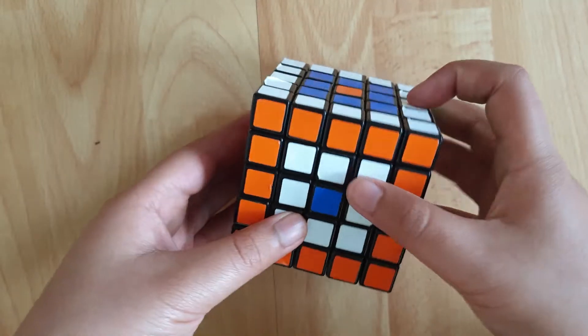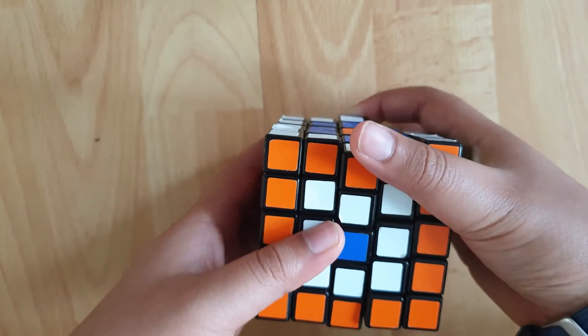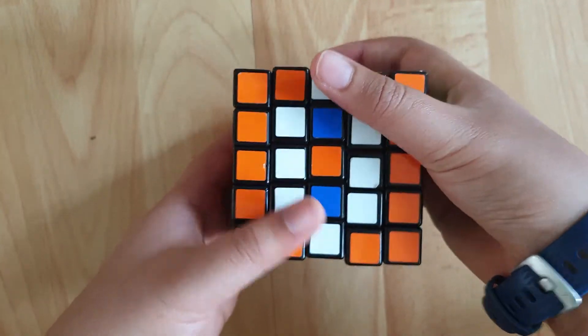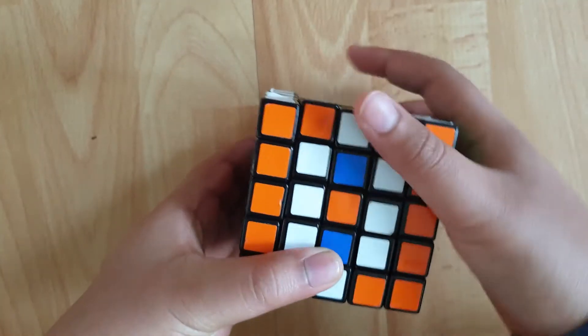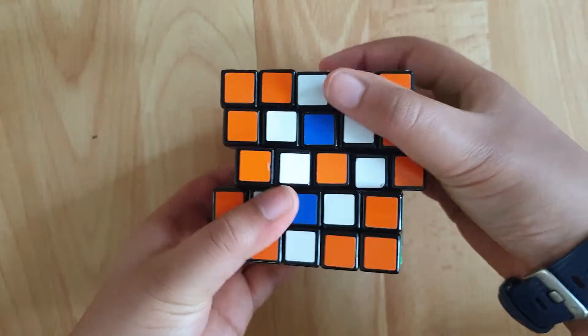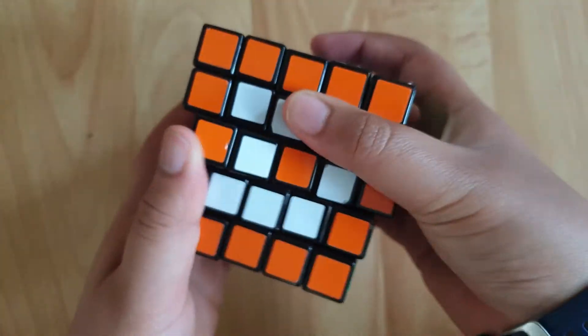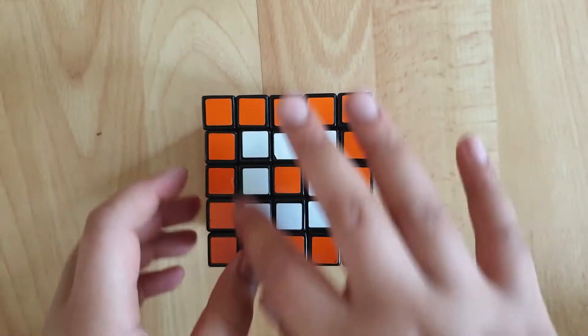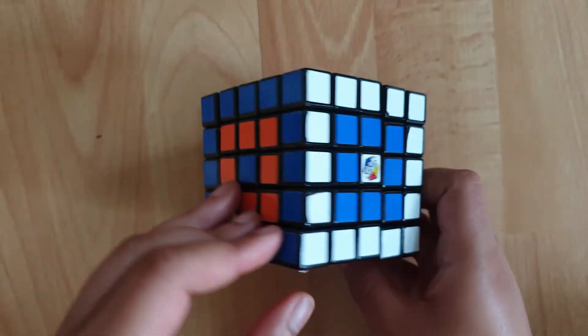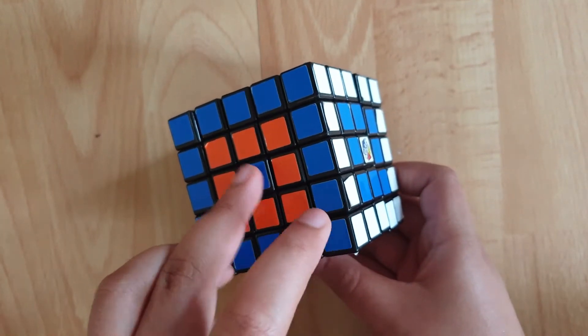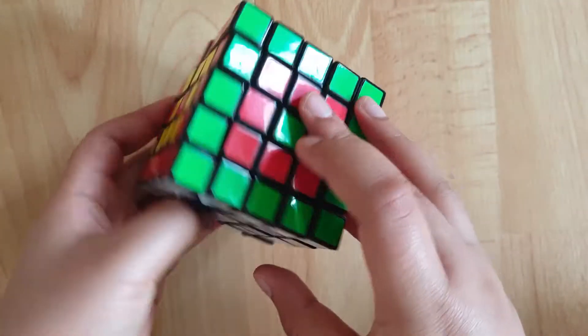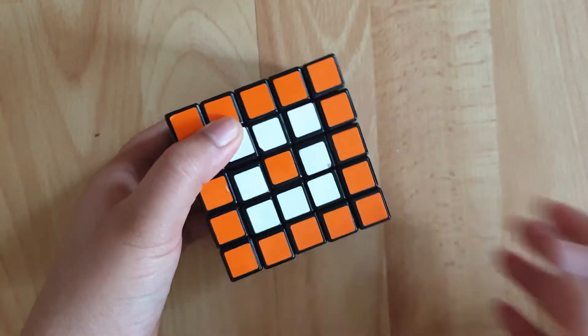...then you're going to do the first algorithm we did. So only one middle layer down, and then one middle layer to the right, and then the middle layer back up, and then the middle layer back across. And then you get this formation where the center and the outer layers are the same. But you can do either one, it doesn't really matter.